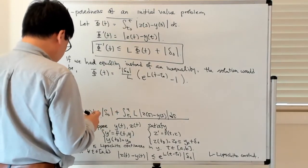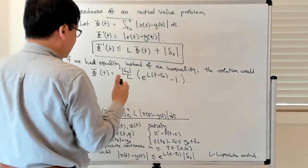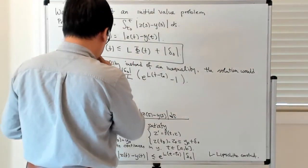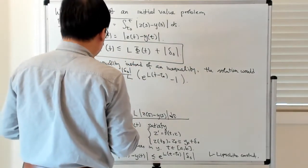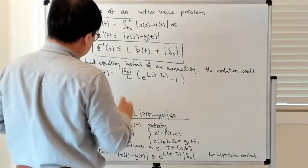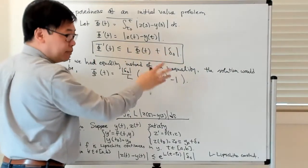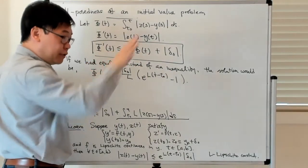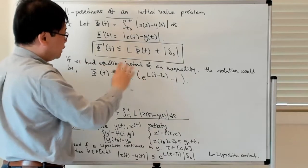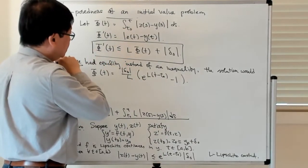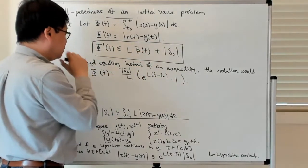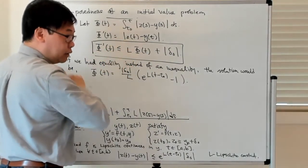You can use the equality solution as an upper bound on the solution satisfying the inequality. Basically, if the rate of change is bounded from above and all terms are positive, having the strict inequality means the solution grows slower than the equality solution. This is Gronwall's inequality: it says φ(t) ≤ (|δ₀|/L)(e^(L(t − t₀)) − 1).